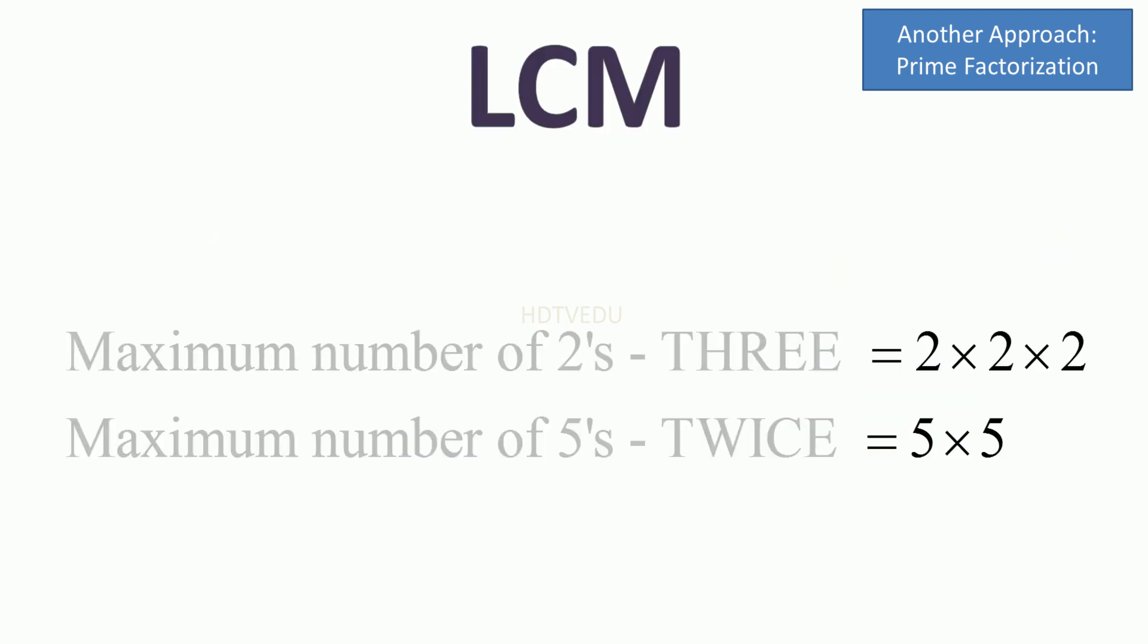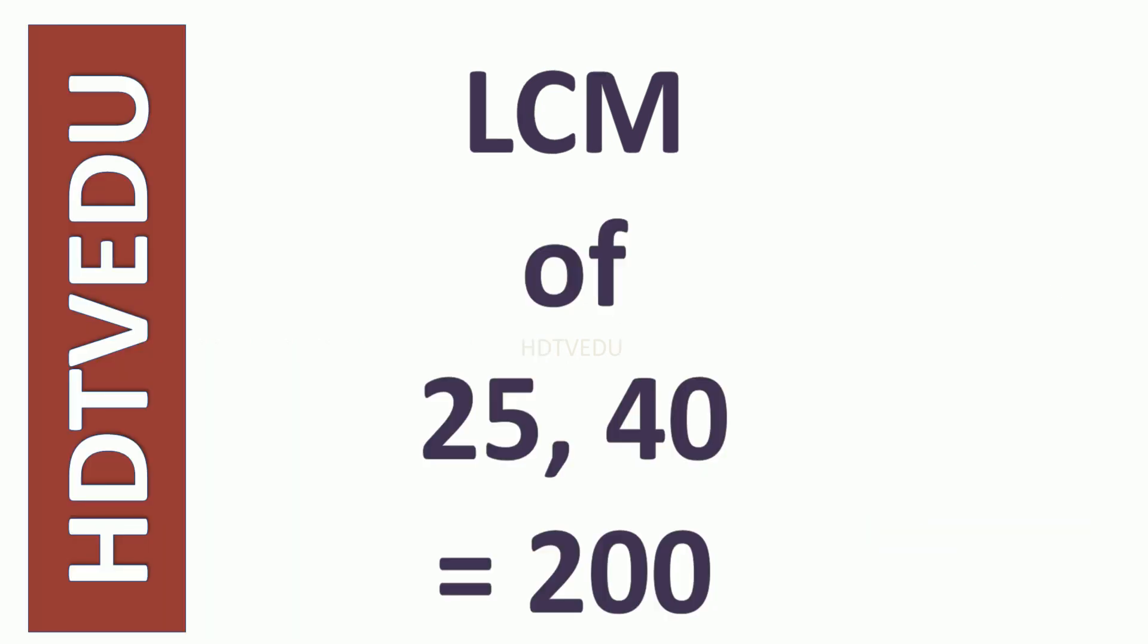What is the maximum number of 2s? 3. 2 times 2 times 2. What is the maximum number of 5s? Twice. When you multiply all these, what do you get? 200. So LCM of 25 and 40 is 200.